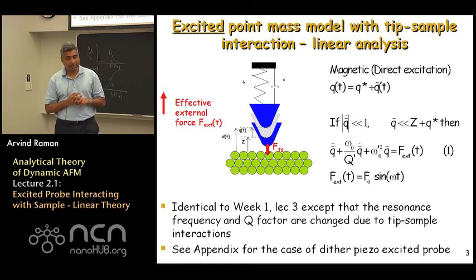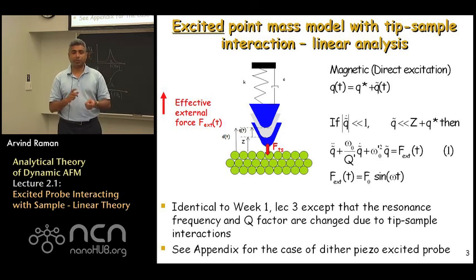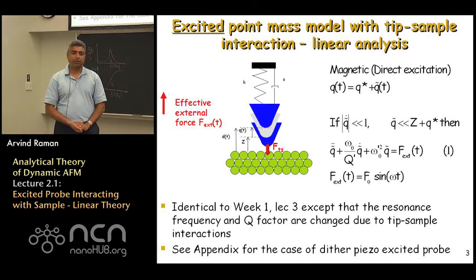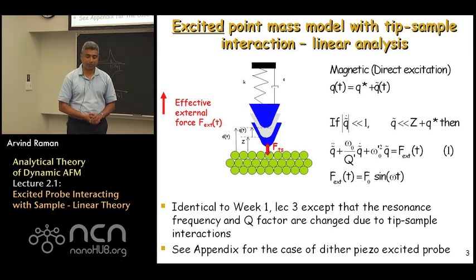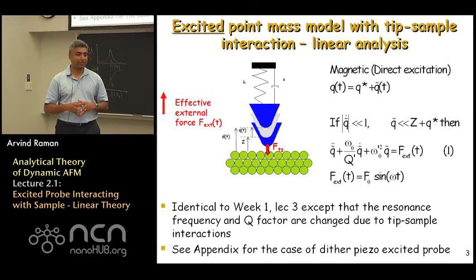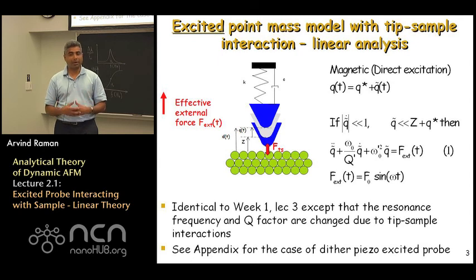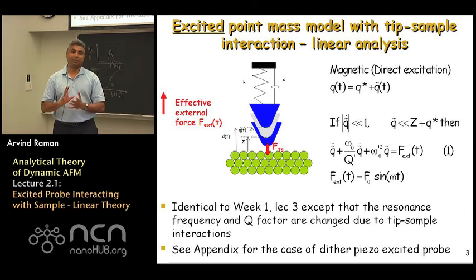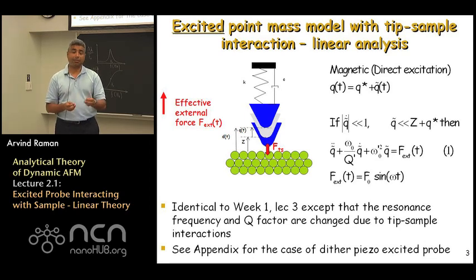This external excitation force f_ext equals f naught sine omega t, where omega is the drive frequency in radians per second. We will interchangeably switch between omega (radians per second) and f (hertz). Equation one is very similar to the steady-state equations for excited probes without tip-sample interactions studied earlier. The only difference is that omega naught squared becomes omega naught prime squared, and the regular Q becomes Q prime — so the tip-sample interaction force creeps in through modification of the natural frequency and Q factor.